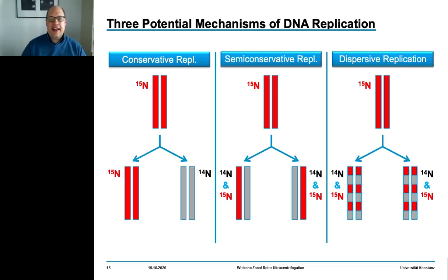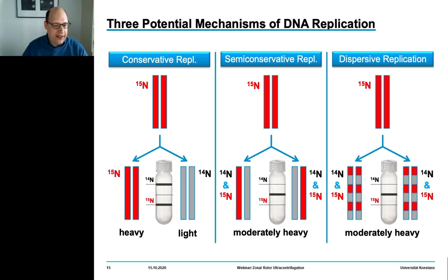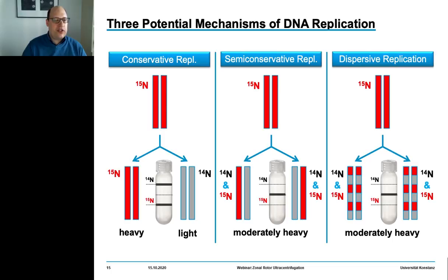In the third (dispersive) mechanism, segments of newly formed DNA together with segments of parental DNA would enter into the newly formed DNA double strands. For the conservative replication mechanism, we would expect a population of heavier DNA together with a population of lighter DNA, whereas for the other two mechanisms we would expect reaction products of medium density — corresponding to either two density populations or a single density population in isopycnic centrifugation.